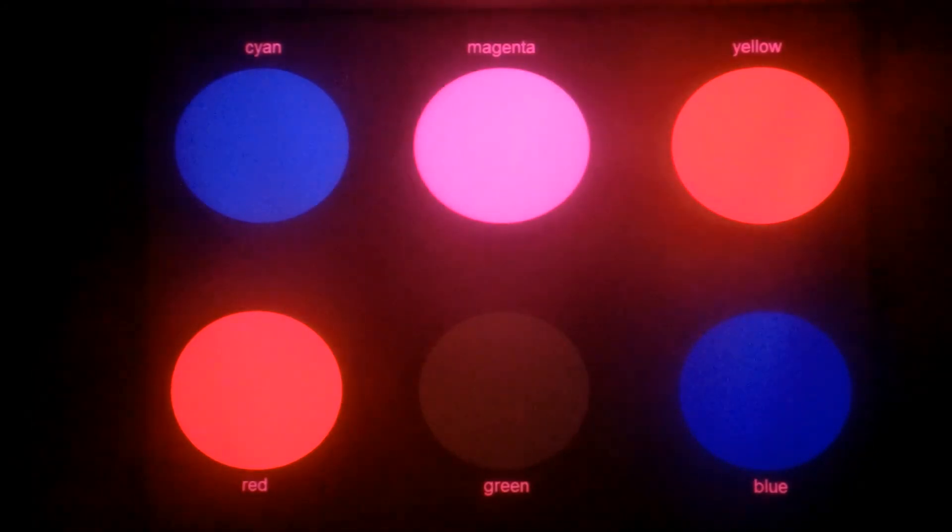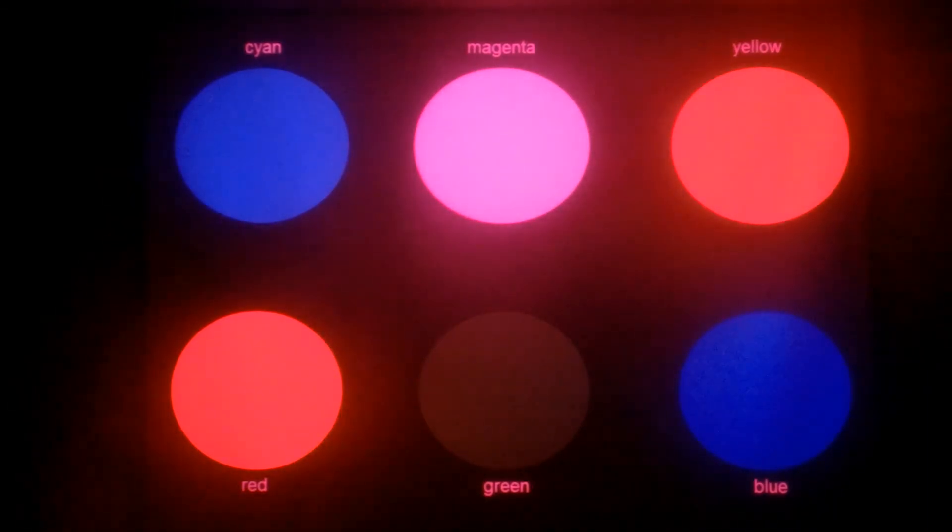Red and yellow both appear red. Magenta appears magenta, and the green is blocked and it goes black, or at least almost.